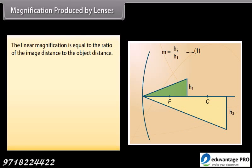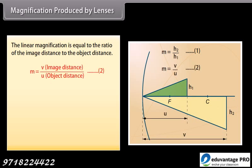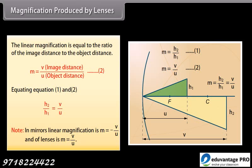The linear magnification is also equal to the ratio of the image distance to the object distance: M = V/U. Equating the two equations: h2/h1 = V/U. Note: in mirrors, linear magnification M = −V/U, whereas for lenses, M = V/U.